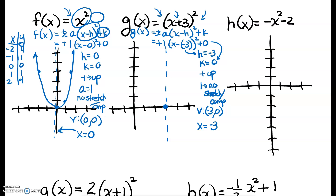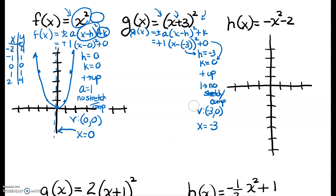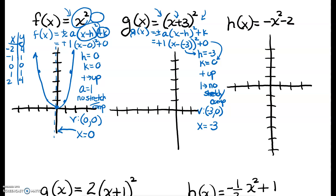The vertex should be at negative 3, so let me redraw the axis of symmetry and graph there. The h value of negative 3 means we're moving all points on the parent function to the left by 3. So the point at (-2, 4) moves to (-5, 4), and all other points shift left by 3 as well. Moving each original point left by 3 gives us our new shifted parabola, which is no longer sitting at the origin.